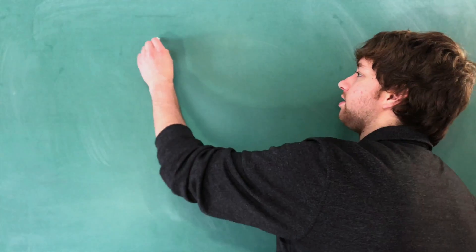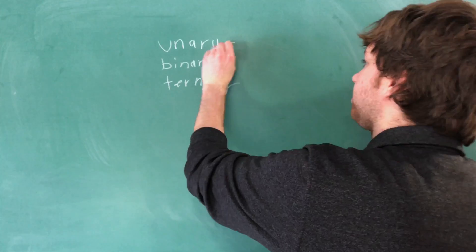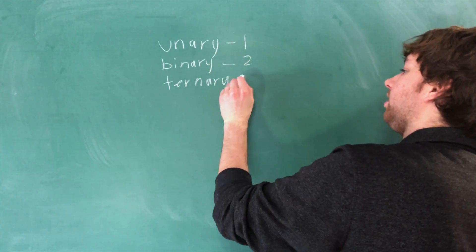Okay, so the answer is unary, binary, and ternary. So this is one operator, this is two, and this is three.